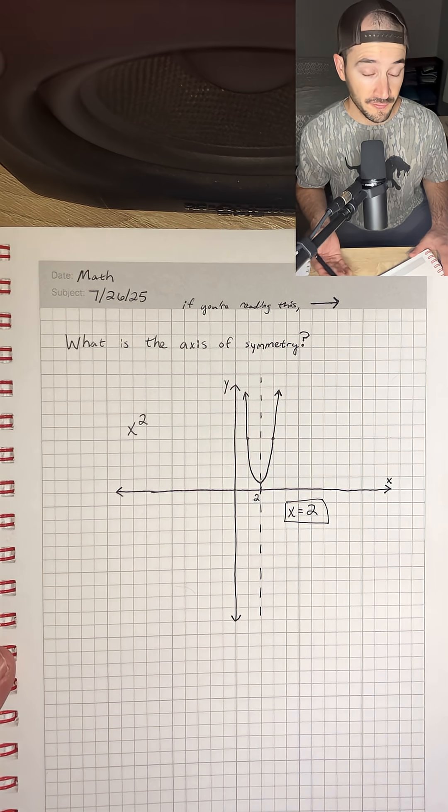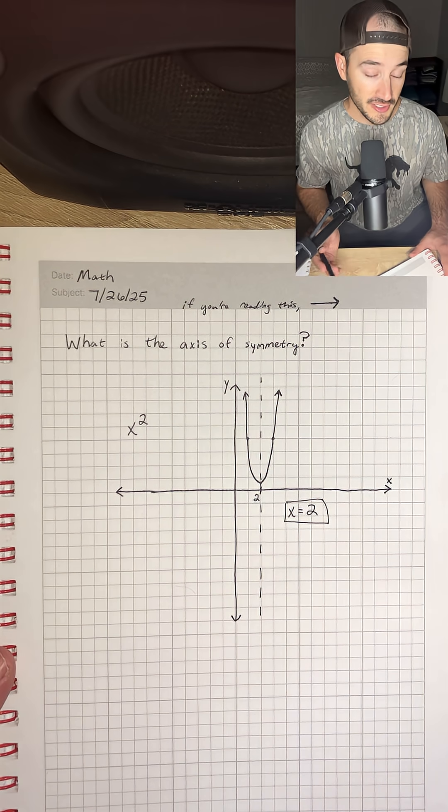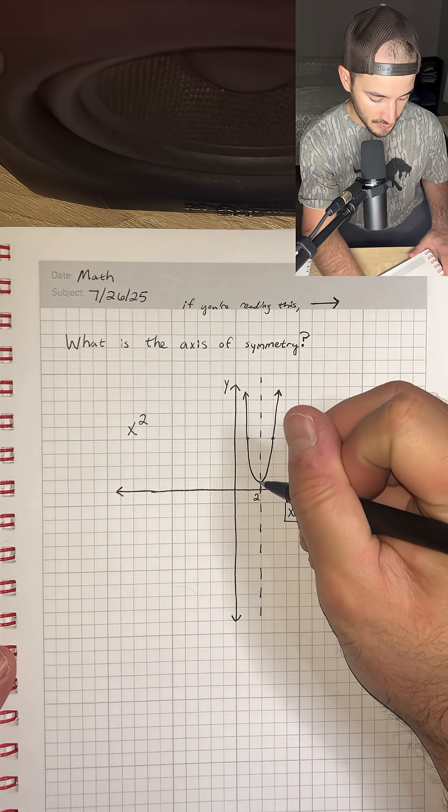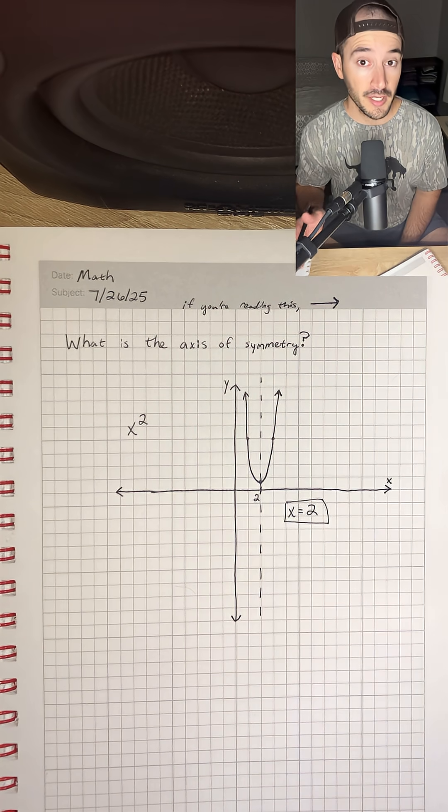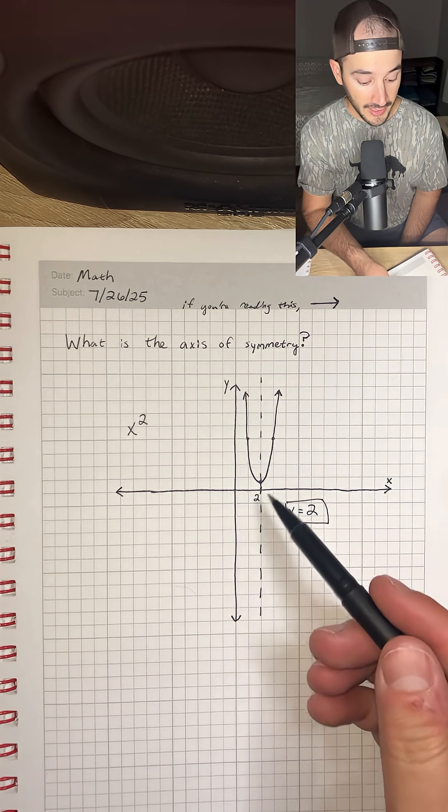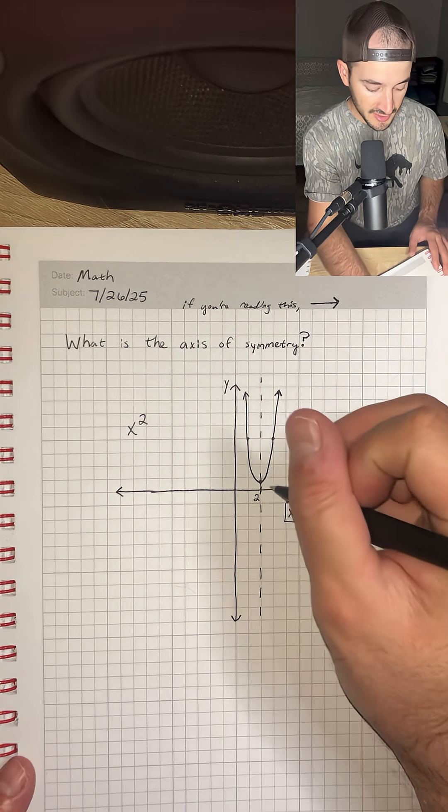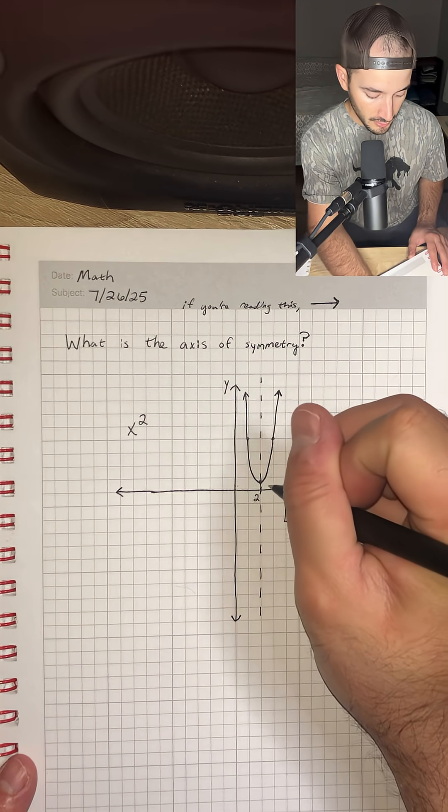Now another important piece of information we can find is called the vertex, which in this case is right here. So the vertex is always the maximum or the minimum point on a parabola. In this case, it's the minimum because it's the lowest point on the graph.